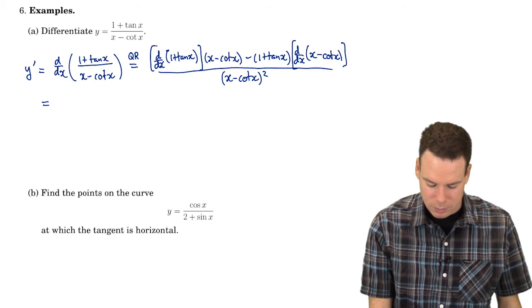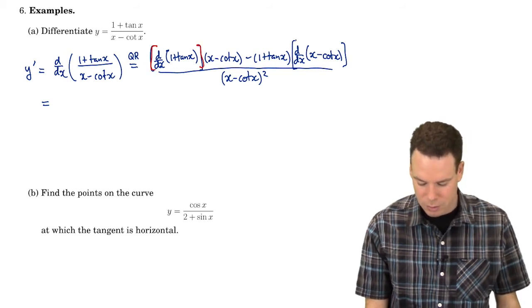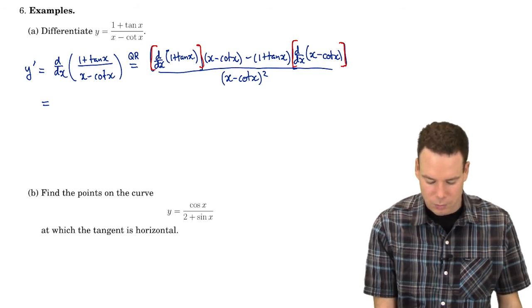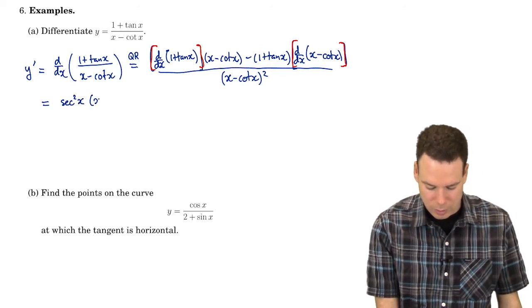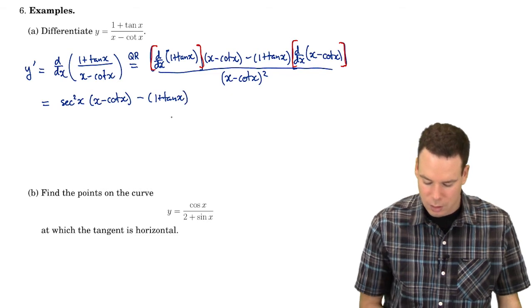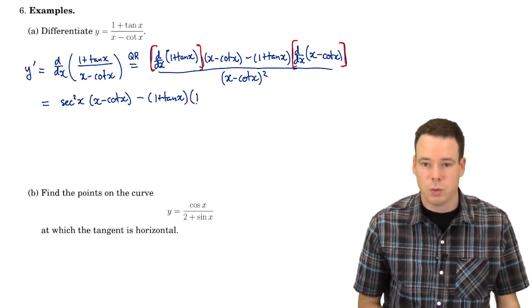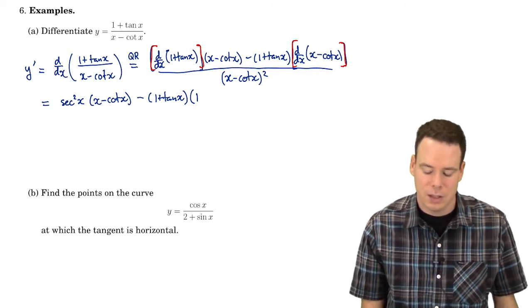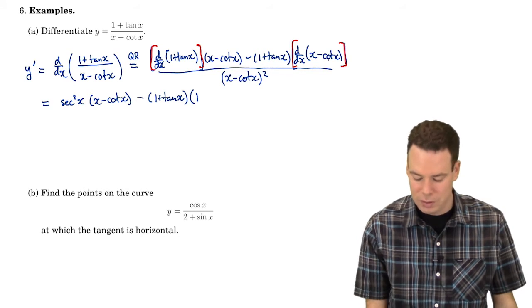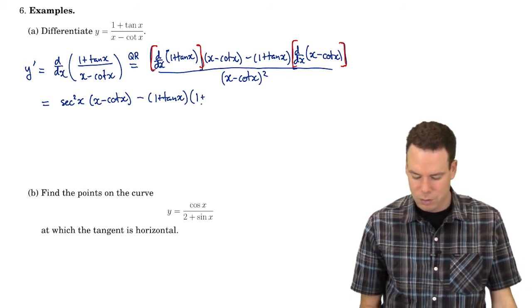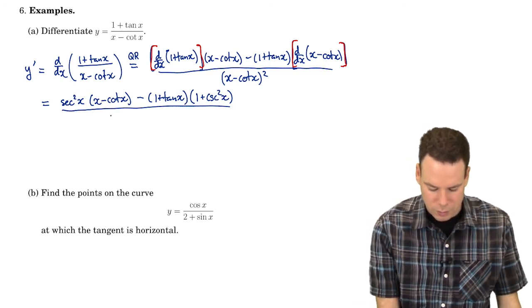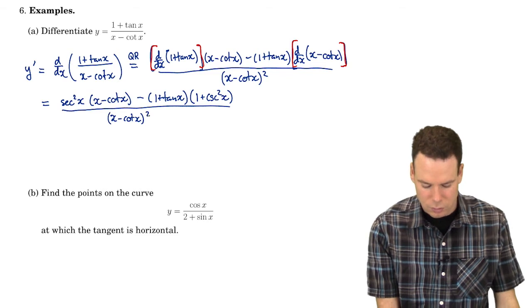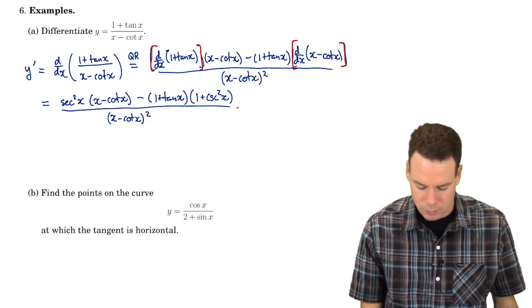Now we can go ahead and compute the derivatives — this is where I pay particular attention to what the top and bottom functions actually were. The derivative of the top, derivative of (1 plus tan of x): tan of x has derivative secant squared of x. Multiply that by (x minus cotan of x). Take away (1 plus tan of x) times the derivative of (x minus cotan of x): derivative of x is 1, derivative of cotan is negative cosecant squared, but there's already a negative out front, so those two negatives combine to give a plus sign. All of this is over (x minus cotan of x) all squared. And there is our derivative.